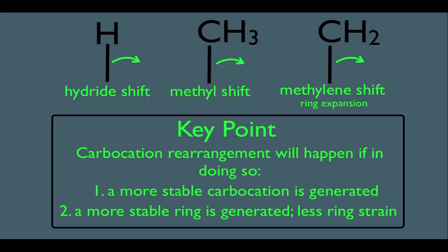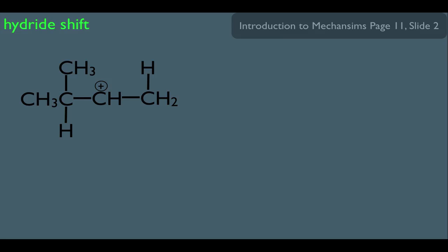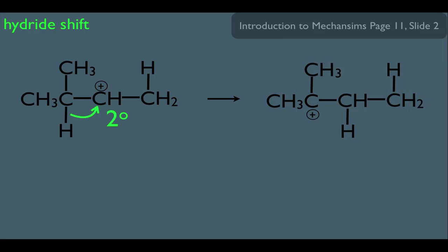Let's look at the hydride shift first. What we see here is a secondary carbocation. Notice that carbon has two carbons directly bonded to it, one on the left and one on the right. We learned in a previous lecture that it's roughly in the middle of the road when it comes to stability. Here's our mechanism move. Notice this arrow is showing this particular movement, and the result of this movement is this structure right here. After this movement, we have a new carbocation — it has rearranged, hence the term.